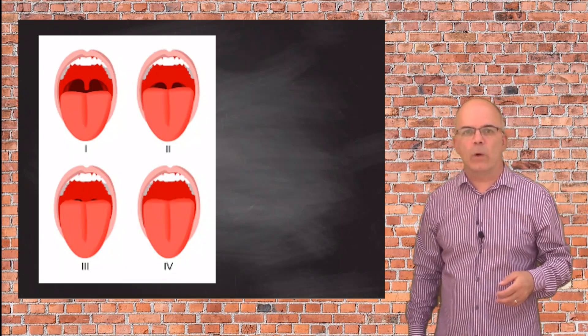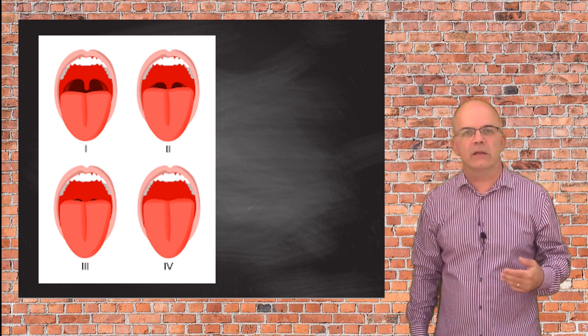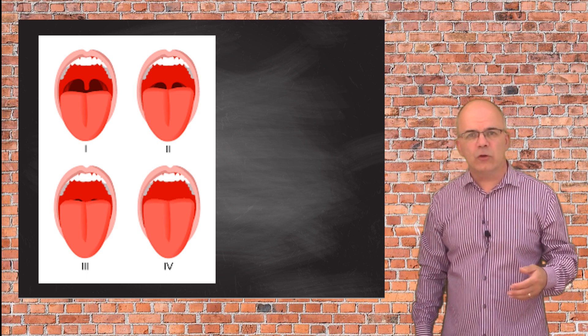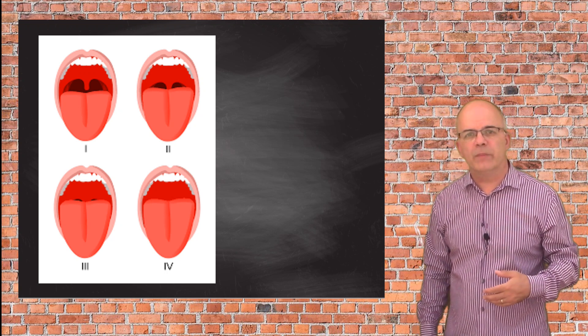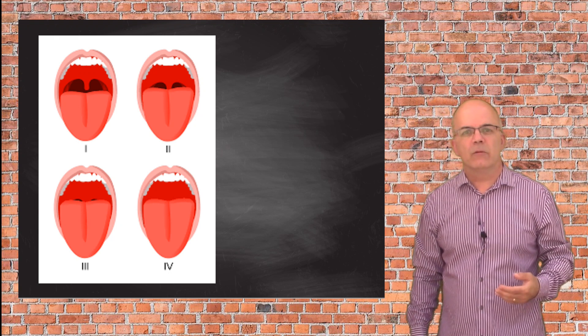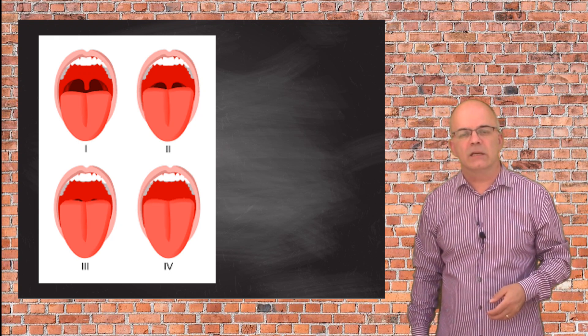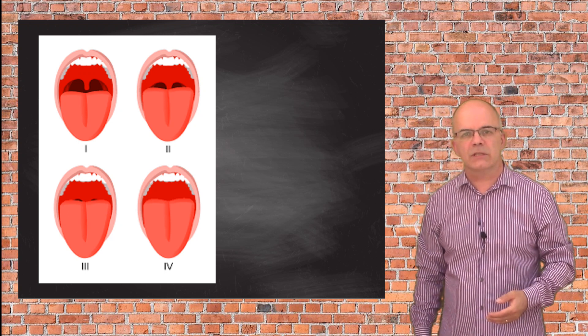The Malampati score is a way of looking at the patient's airway pre-intubation to judge how well they can open their mouth. The score ranges from 1 to 4 with 1 being the easiest airway and 4 being the most difficult. This is a visual scoring system and relies on some subjectivity. Realistically, one is unlikely to be able to do this in an emergency situation.